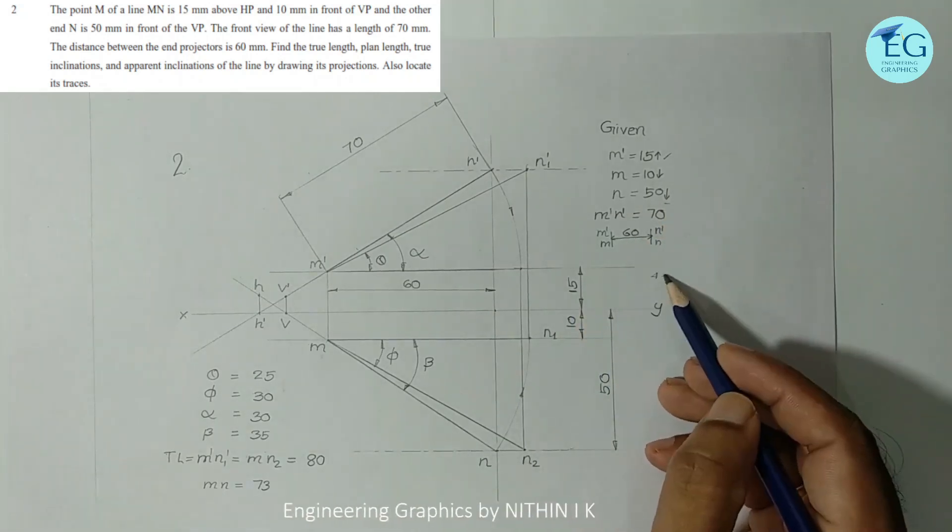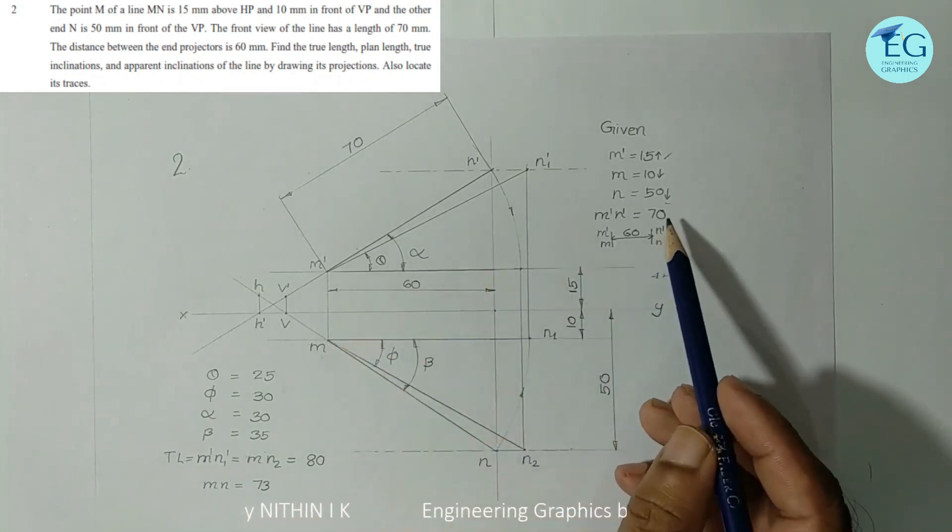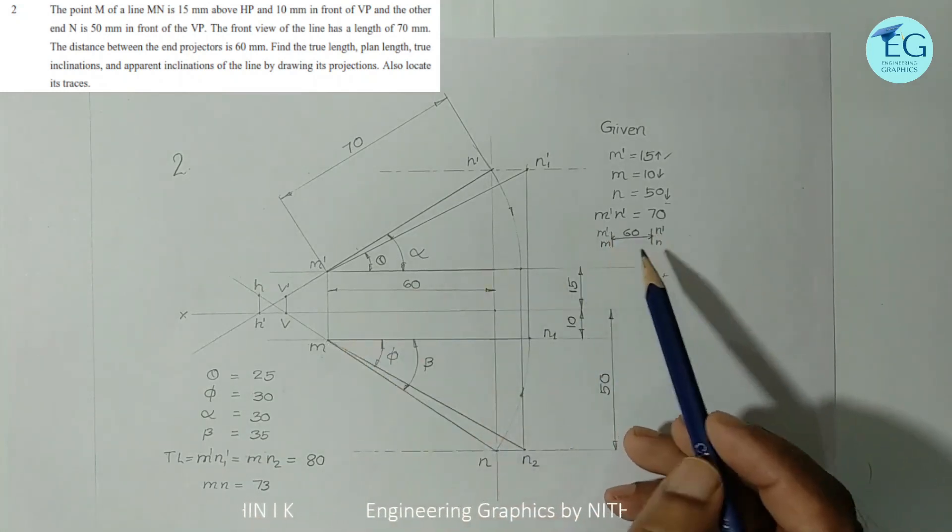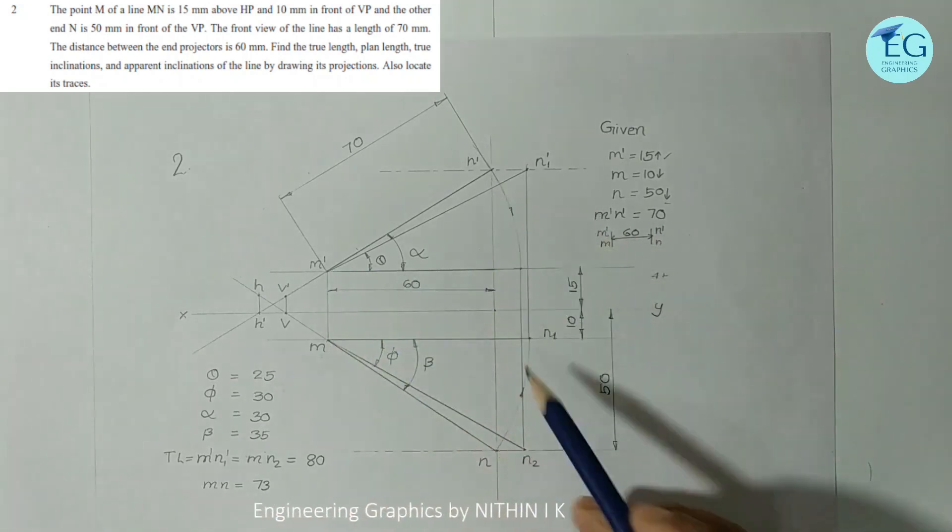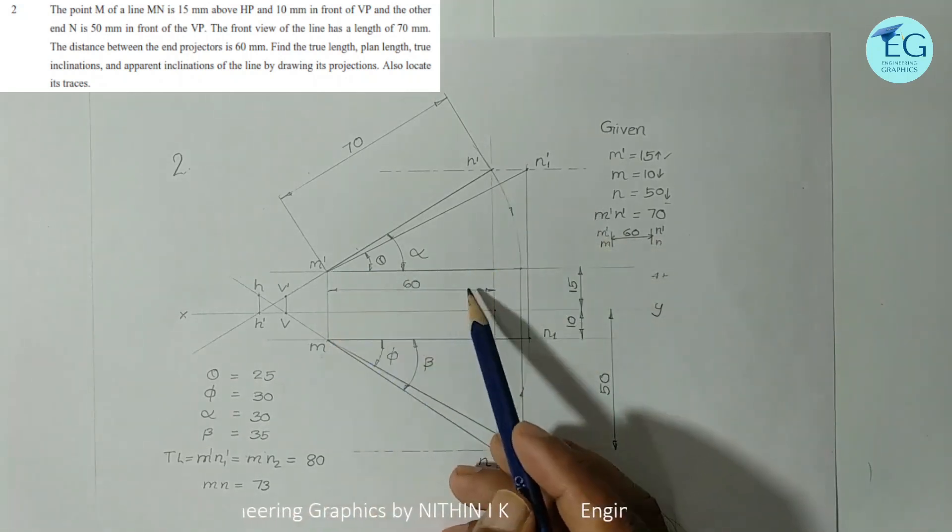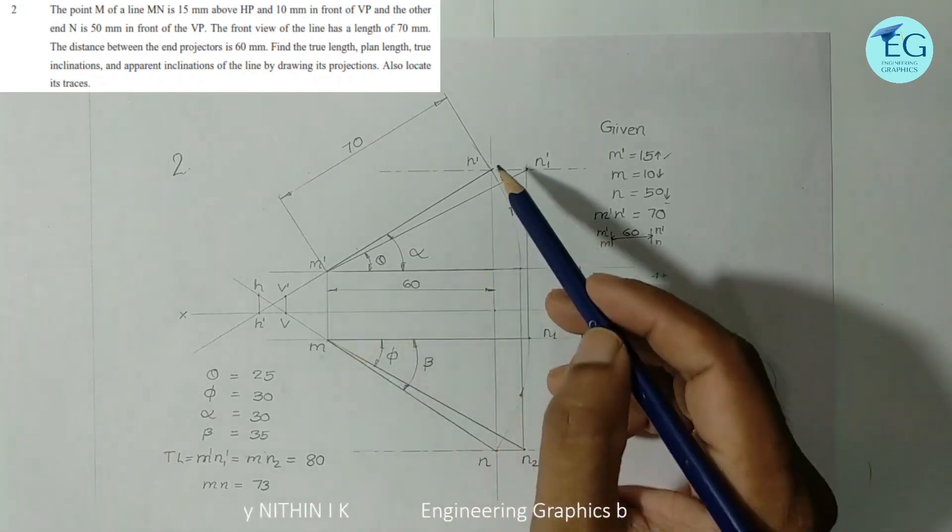We will complete the MN line. The distance between end projectors is equal to 60mm. M dash N line is m-N-N line. We have 60. This distance between end projectors is equal to 60mm. We can select the M line.